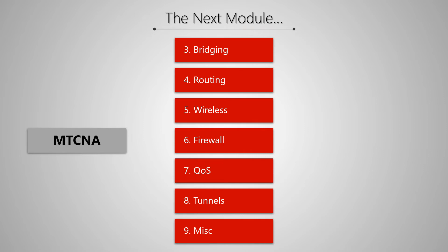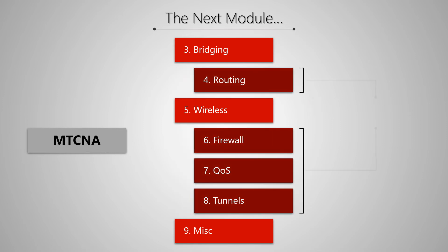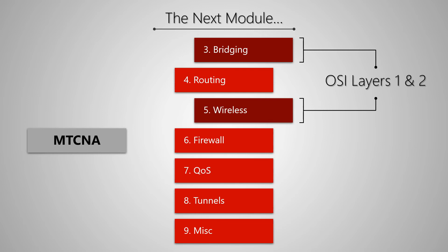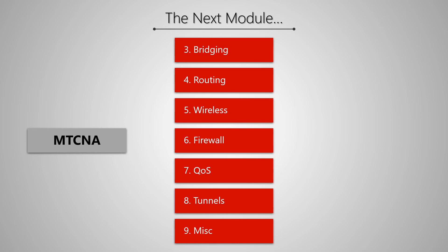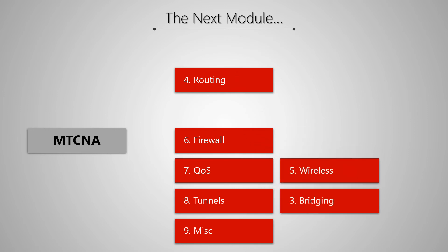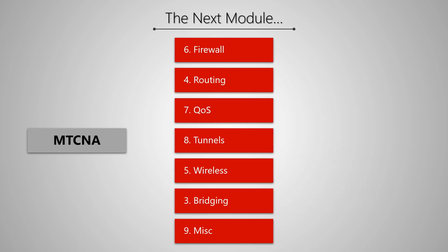Therefore, the better you understand firewalls, the easier you'll learn about routing, QoS, and tunnels. Moreover, modules 4, 6, 7, and 8 operate in a layer 3 network, whereas the bridging and wireless modules are almost completely related to layers 1 and 2, which means we'll have to modify our MTCNA home lab for modules 3 and 5. With the aim of giving you a much better and easier learning experience, while still covering all topics in the MTCNA course outline, we're going to make a little modification in the order of these modules and postpone the subjects of bridging and wireless for a later time.